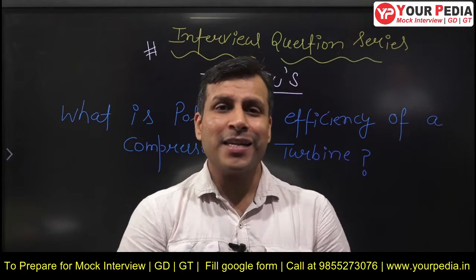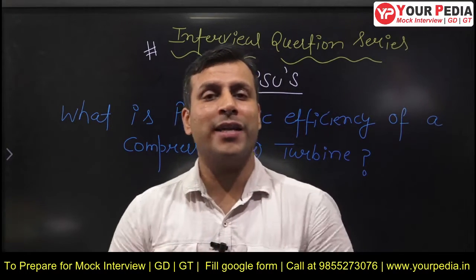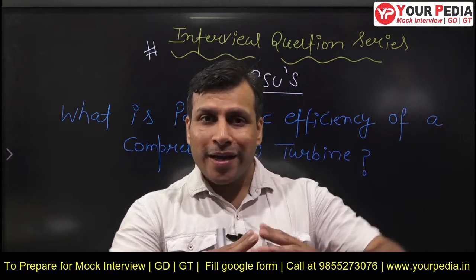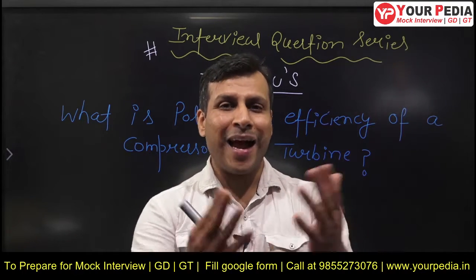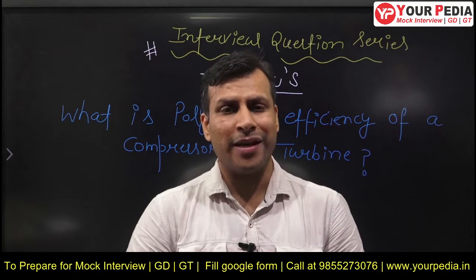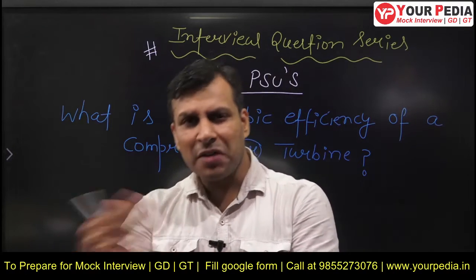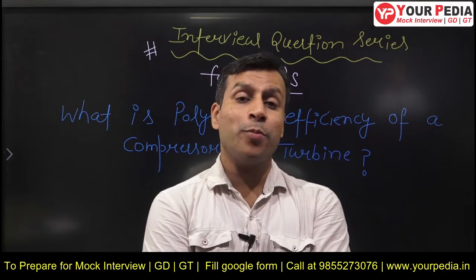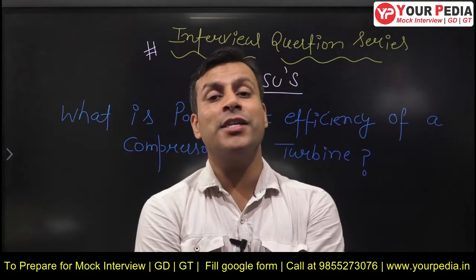Then what is this polytropic efficiency? This efficiency is very much similar to the isentropic - it is actually an extension of isentropic efficiency. Isentropic efficiency tells us about the deviation of a particular expansion or compression process from the isentropic one. In the ideal case, we assume isentropic compression in the compressor and isentropic expansion in the turbine. But in the real case, if the process is not isentropic or reversible adiabatic, the entropy will increase - it is not going to remain constant. So we will deviate from the isentropic path.